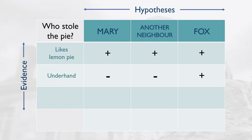And finally, the last piece of evidence is that the person — or animal — would have to be physically able to get the pie and take it away. Now as it happens, Mary had recently broken her leg, and Bob knew this, so he knows that she wouldn't be physically able to steal the pie.